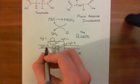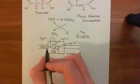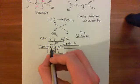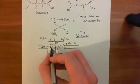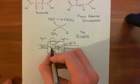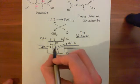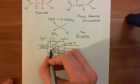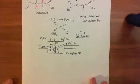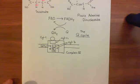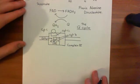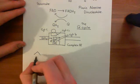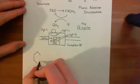A molecule of ubiquinol comes in. What's going to happen is it's going to give one of its electrons away. Actually, it's going to give both of its electrons away, but we'll track the passage of one of its electrons first. One electron is going to move down to this ubiquinol molecule. What happens if you only give one electron to a ubiquinol molecule?